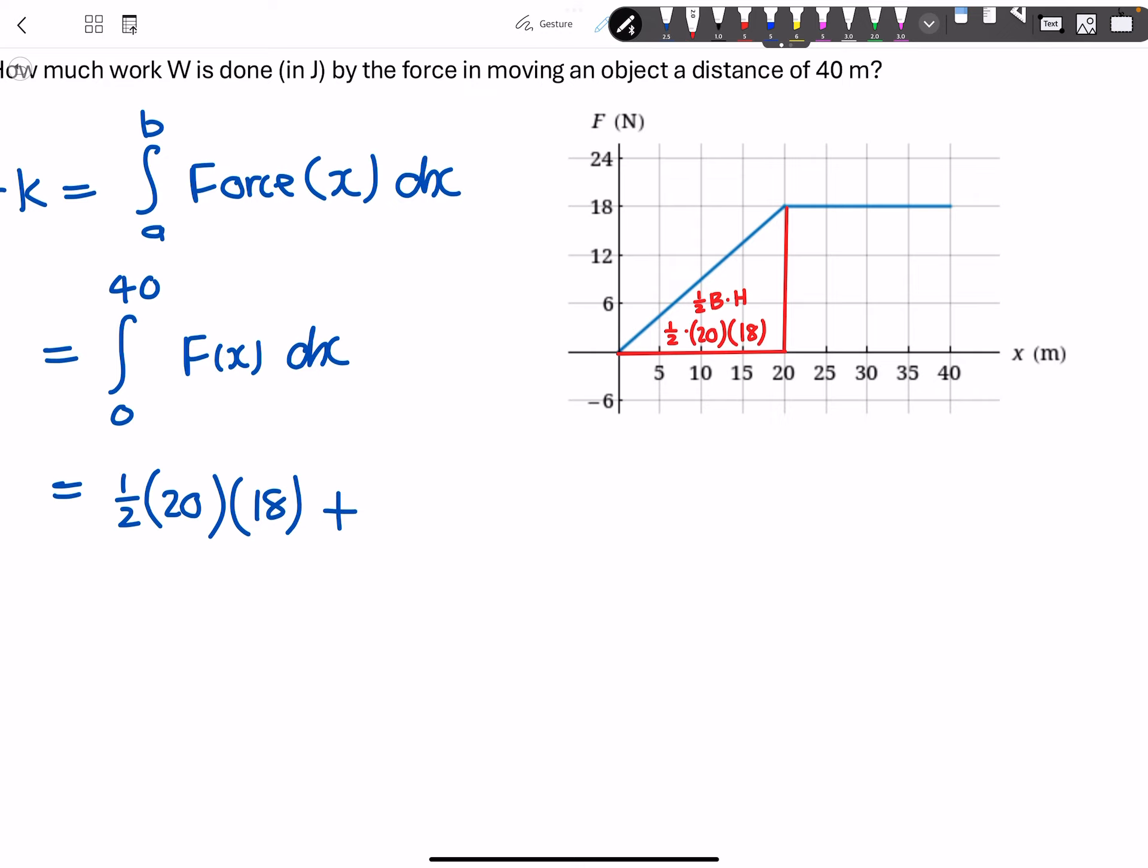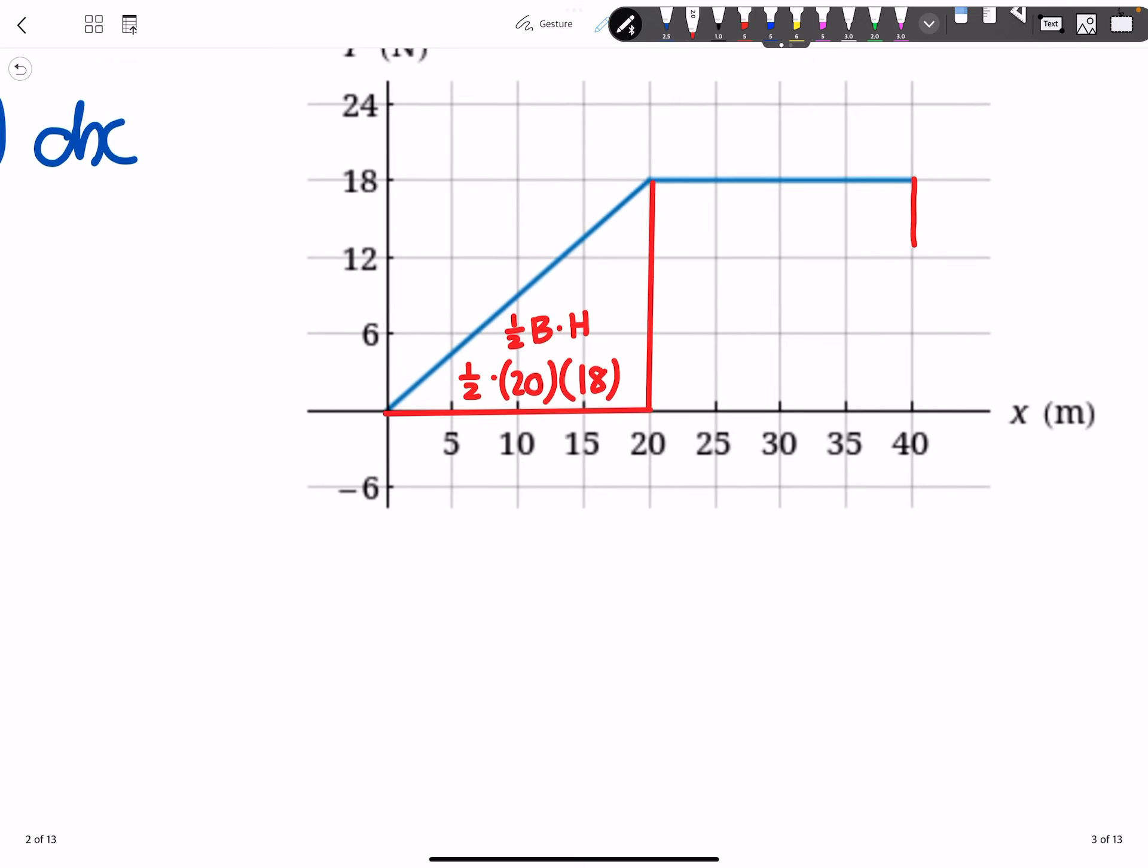And then this second region over here, this region that's formed here, can be calculated again. So this is just a rectangular region. So from 20 to 40.